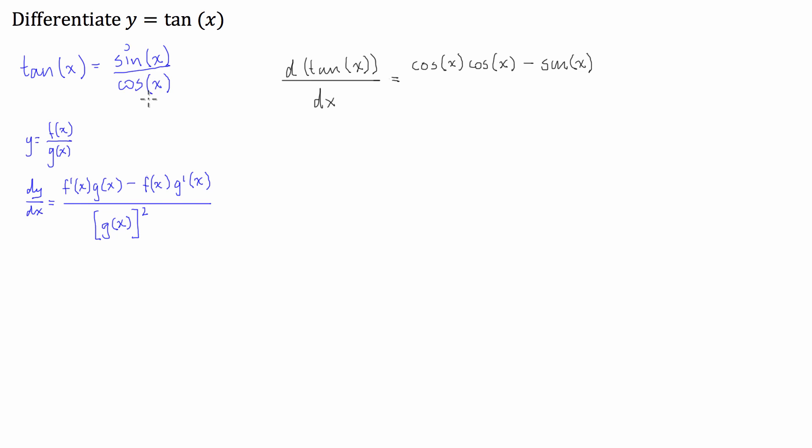times by the derivative of the denominator. Now, the derivative of cosine of x is negative sine of x. And now, this is all divided by the denominator squared.